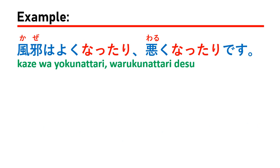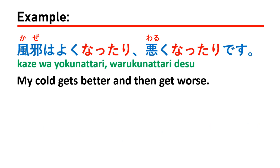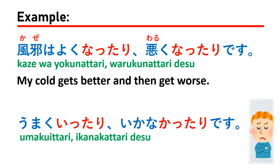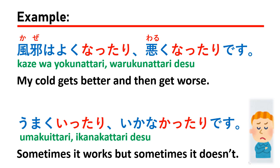The next sample is: 風は良くなったり悪くなったりです, which means 'my cold gets better and then gets worse.' Another example is: 上手くなったり悪くなったりです, which means 'sometimes it works but sometimes it doesn't.'